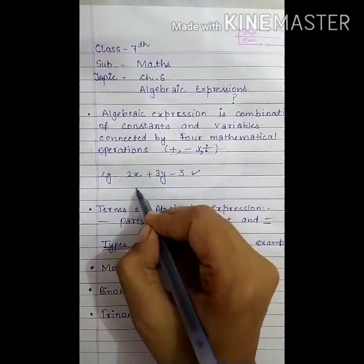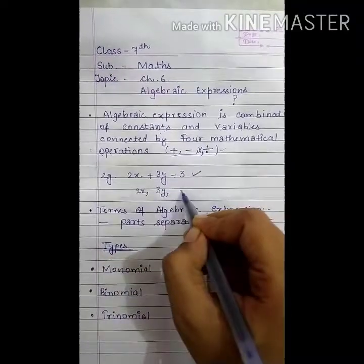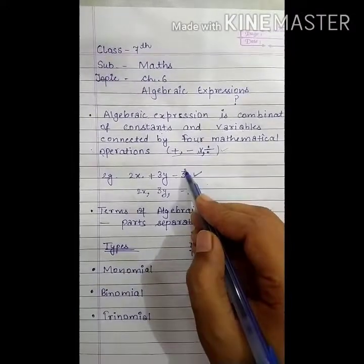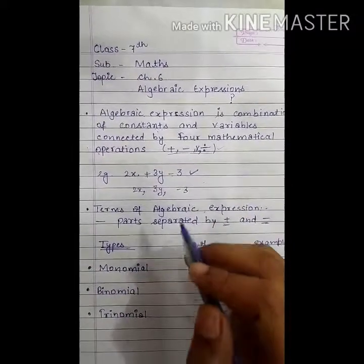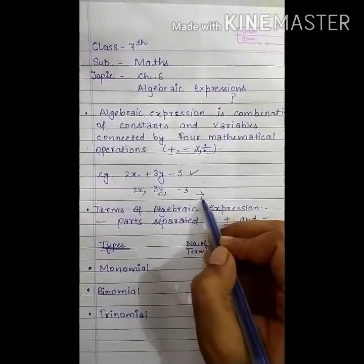In this question, 2x is one of the term. Three y is one of the term. Minus three is also a term of this algebraic expression. So, in total, this expression has three terms.